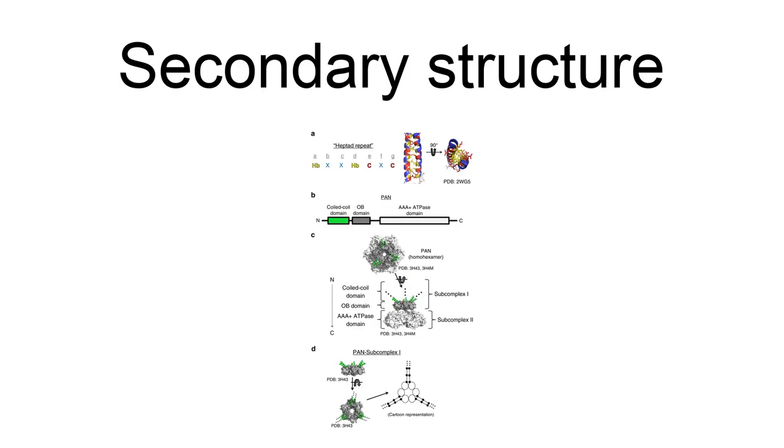Predicted secondary structure for CCDC-74A consists of four alpha-helix regions, which are summarized in the table below and the diagram to the right.